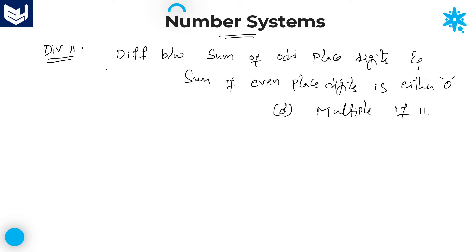If any number is divisible by 11, then the difference between the sum of odd-place digits and the sum of even-place digits is either 0 or a multiple of 11. Then that particular number is divisible by 11.